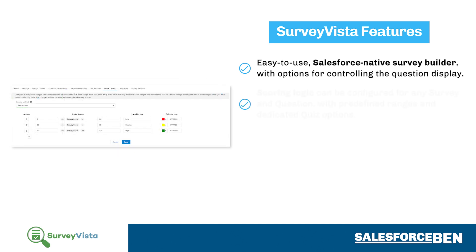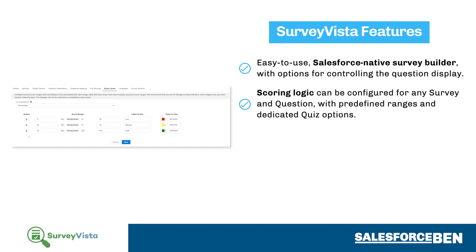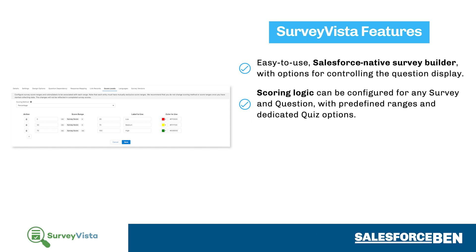Customizable scoring logic can be configured for any survey and question, with predefined ranges and dedicated quiz options. For example, you can enable a quiz to have a maximum response time, while each score range can have its own label and color as well.